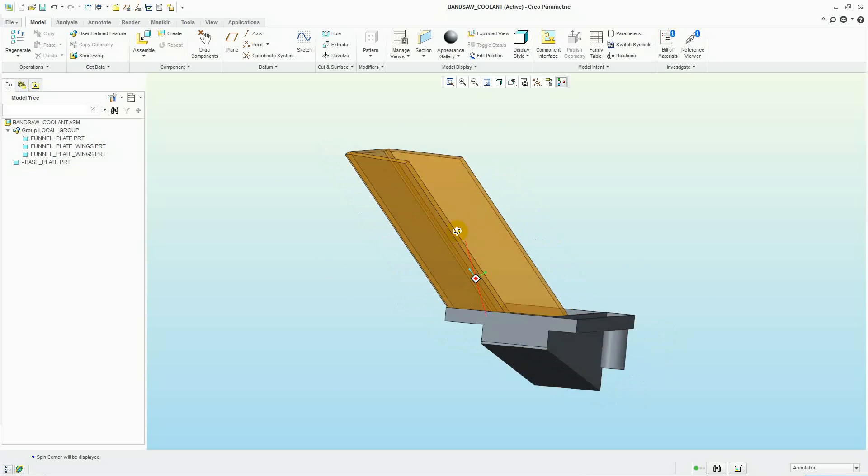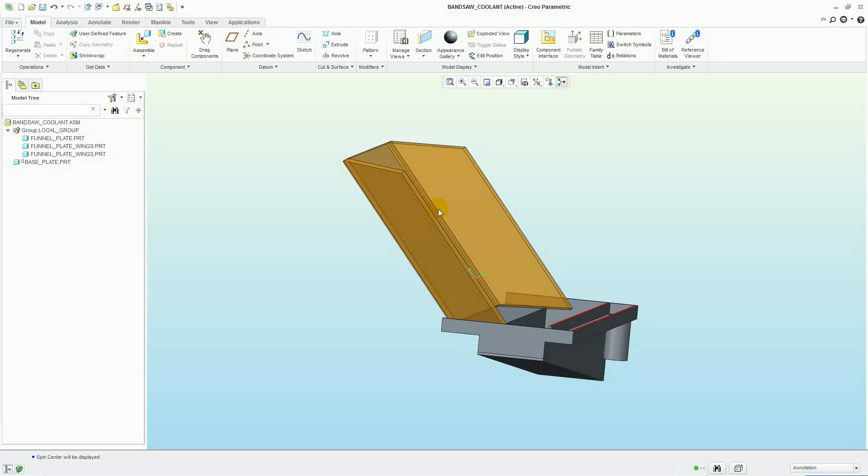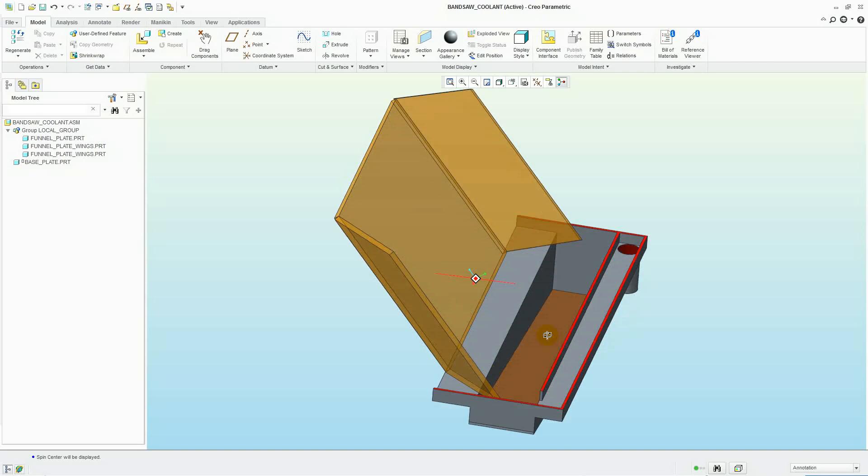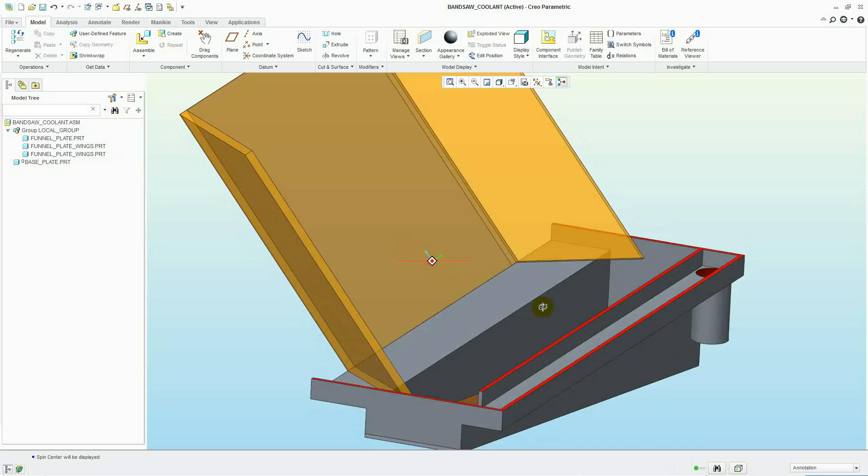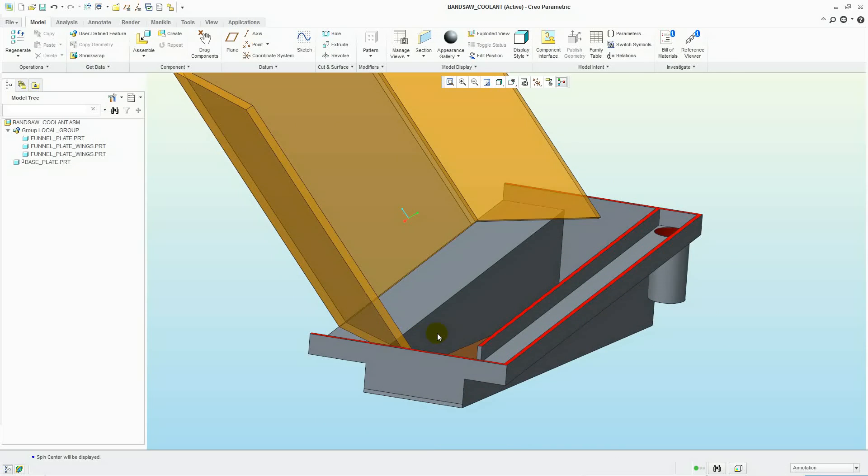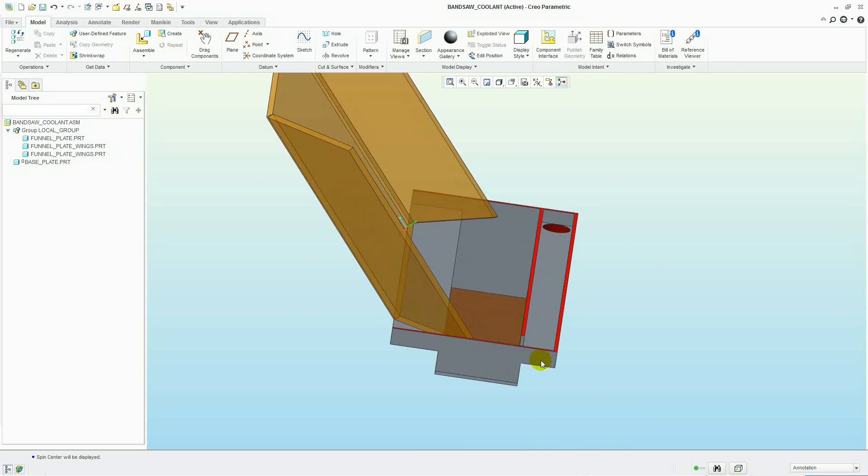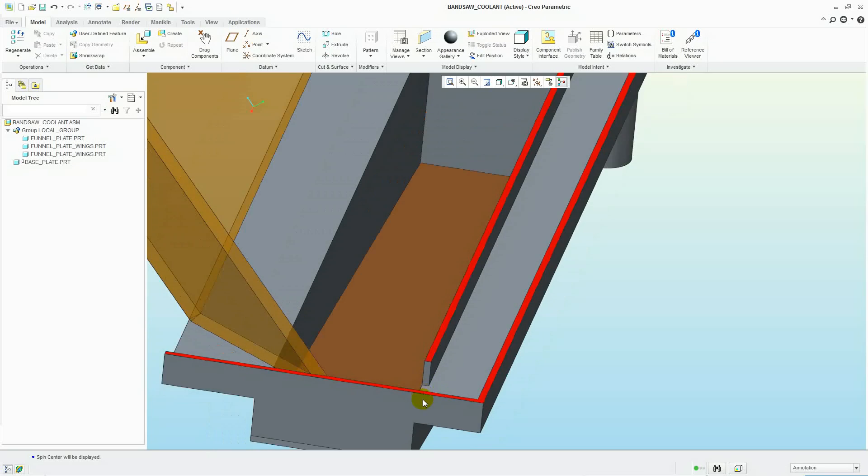Basically, the chute here catches the coolant as it comes off the saw and it flows down into this trough. This trough is deeper at one end to allow the heavier debris to collect. As more coolant flows in, it fills up the trough and will eventually overflow at this point and run down into this drain, which will return it back to the main reservoir.